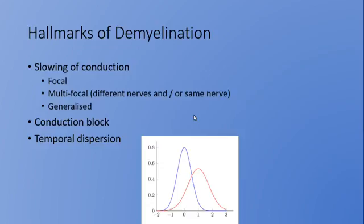These are the hallmarks of demyelination. We have slowing of conduction — this can be a very focal process, it can be multifocal affecting different nerves, it can even affect the same nerve in different places as it travels along, or we could have generalized slowing of conduction. We've alluded to conduction block where the signal is stopped from going along the nerve itself. And we also have a concept called temporal dispersion, where the spread of conduction velocity increases although the actual area remains the same.